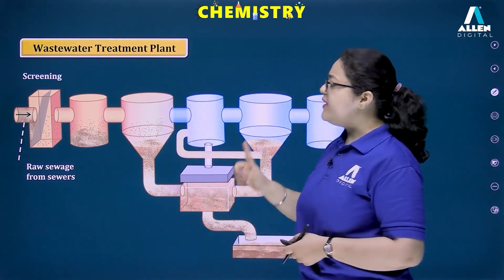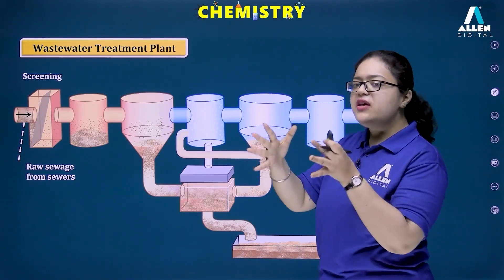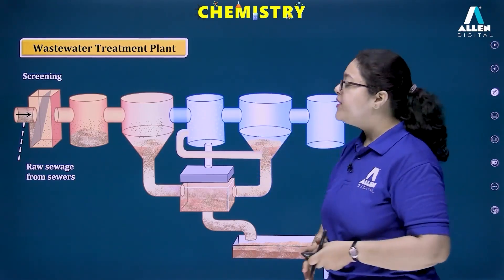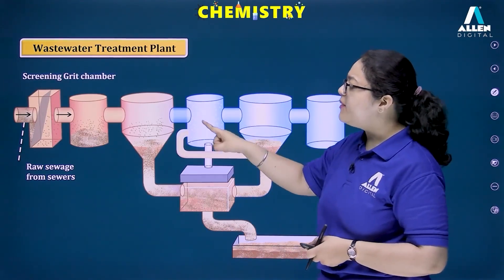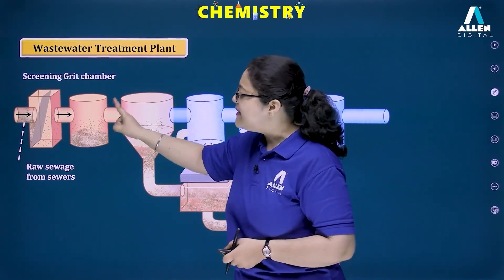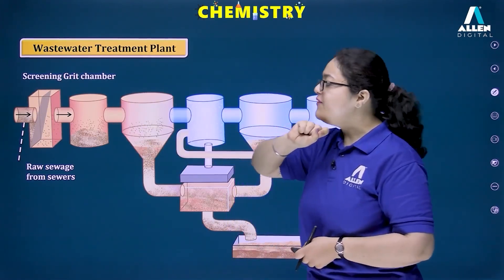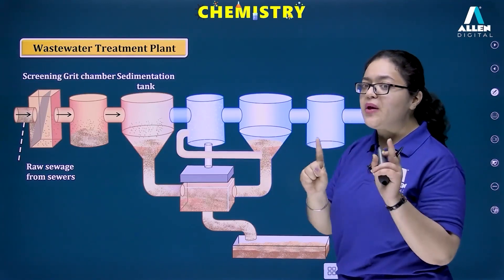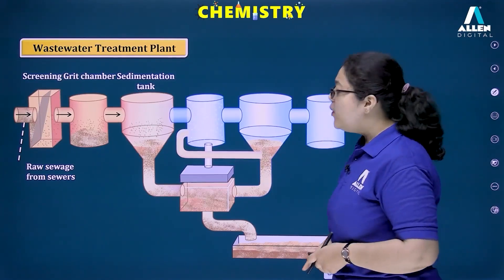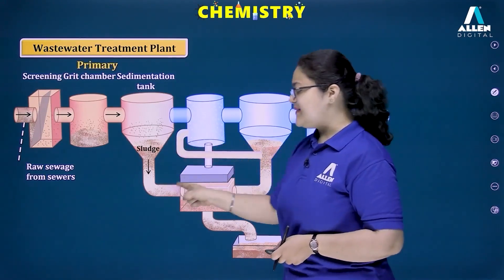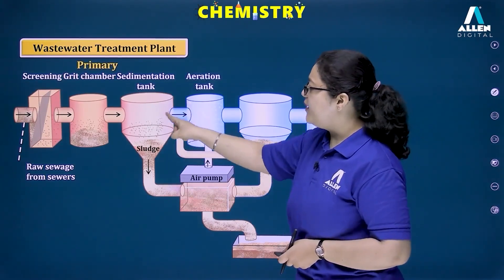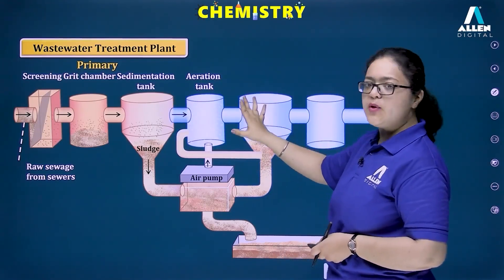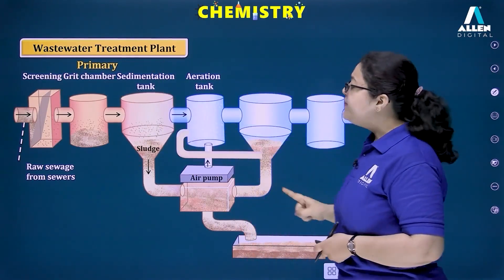Looking at the diagram: in the primary process, raw sewage from sewers first goes through screening — vertical metal bars — where large impurities like plastic, cloths, rags, and wooden sticks are removed. It is then passed into the grit chamber where sand, mud, and silt particles settle down. The wastewater then moves into the sedimentation tank, where organic impurities settle as sludge. The clarified water from primary process is then passed on into the secondary process.